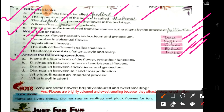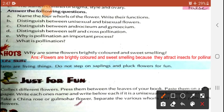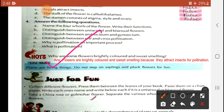Now we will discuss question number 4. Before the question-answer, there is also a hot question: why are some flowers brightly colored and sweet smelling? The answer is: because they attract insects for pollination. Flowers are brightly colored and sweet smelling because they attract insects for the pollination process.